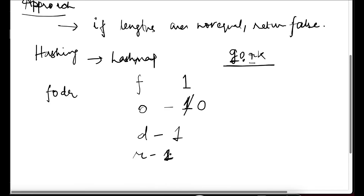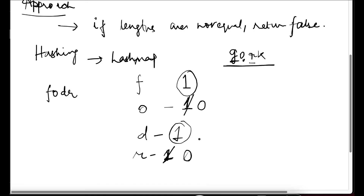'k' is not in the map so we do nothing for it. Once we've processed the second string, we add up the remaining values in the map. We get one plus one equals two, and two is less than or equal to K, so we return true.